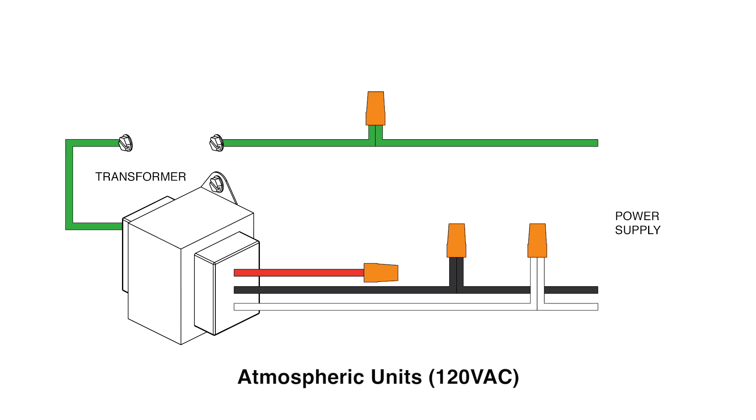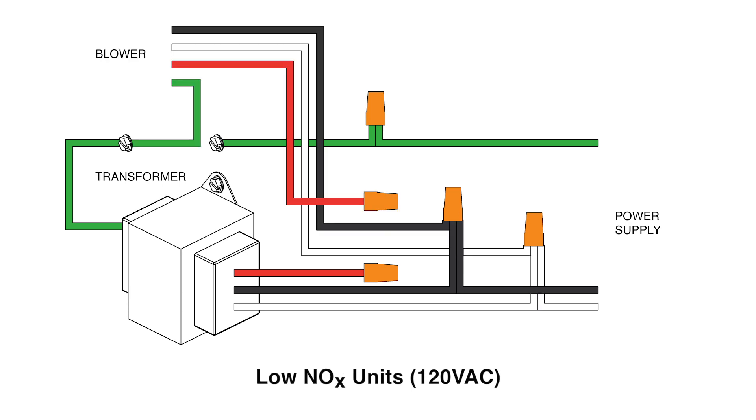Use a wire net to terminate the red wire. For LoNox models, add each black, white, and green wire from the blower relay to their respective color wires.